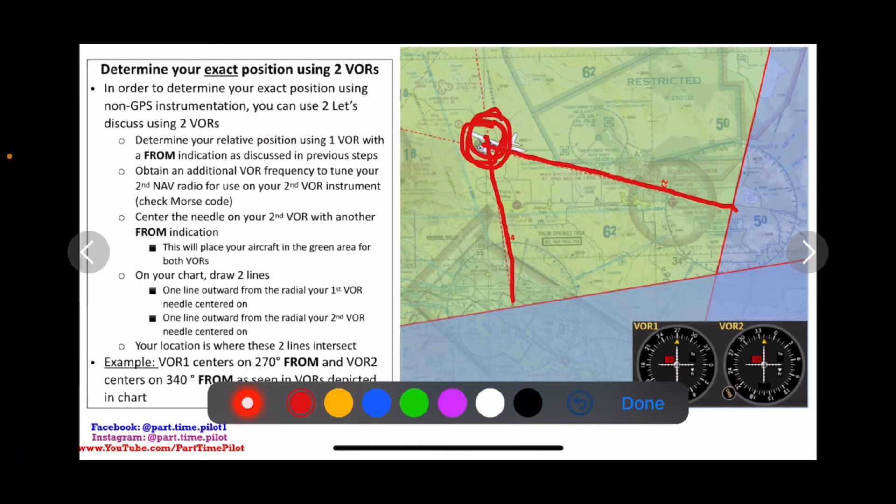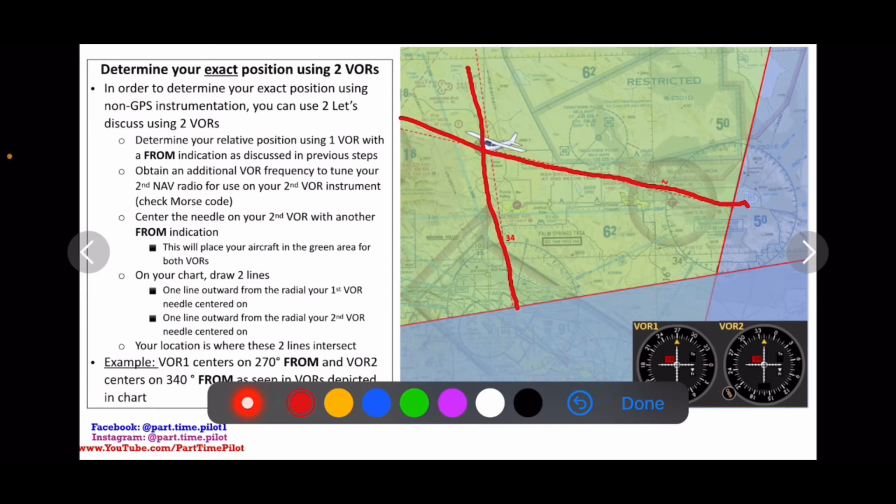Now what we do is we simply draw the two lines, which I already have drawn here, but we draw outwards on two seven zero, and then we draw outwards on three four zero. And then where these two lines crossed, that's where our aircraft is located.